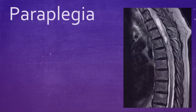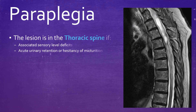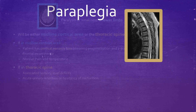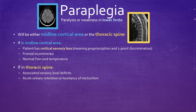Now, if the lesion is in the thoracic spine, it comes with associated sensory level deficits and acute urinary retention or hesitancy of micturition. Here is a slide summarizing these points.